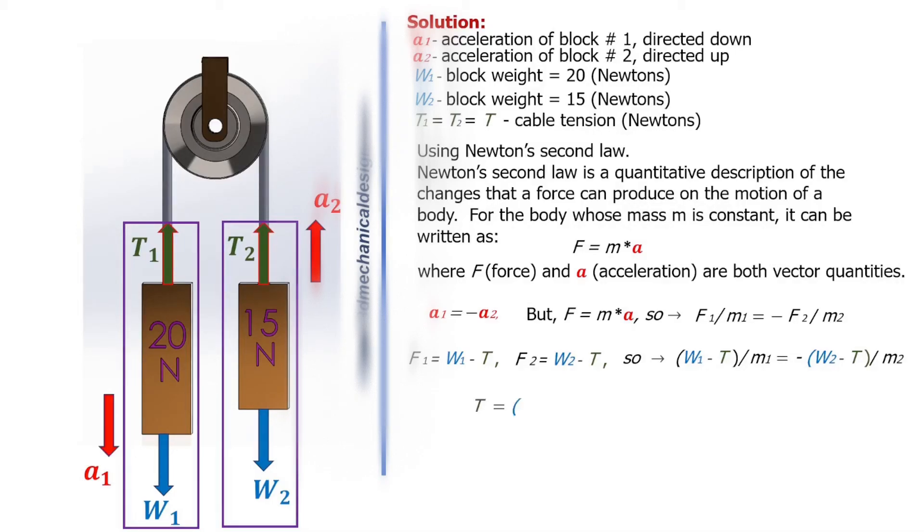T equals W2 times m1 plus W1 times m2 divided by m1 plus m2, equals 17.14 Newtons.